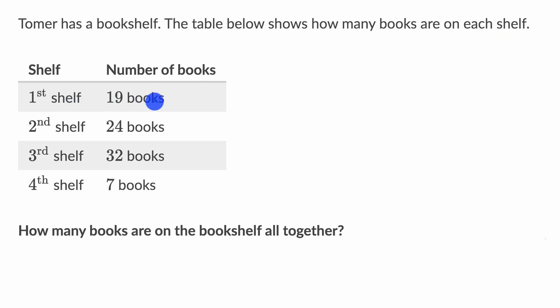So the first shelf has 19 books, the second shelf has 24 books, the third shelf has 32 books, and the fourth shelf has seven books.